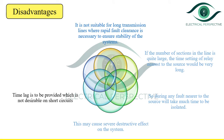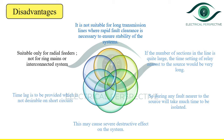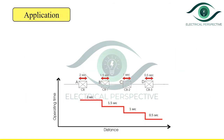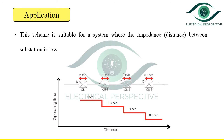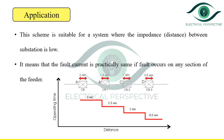Additionally, the time lag provided is not desirable for short circuits. This system is only suitable for radial feeders and is not suitable for ring mains or interconnected systems. Regarding application, this scheme is suitable for systems where the impedance — meaning the distance between substations — is low, so that the fault current is practically the same if the fault occurs on any section of the feeder.